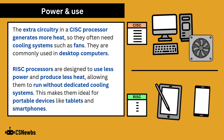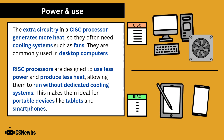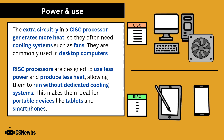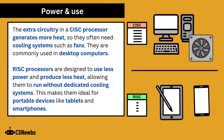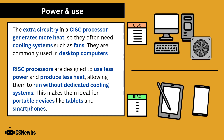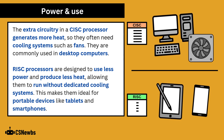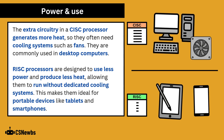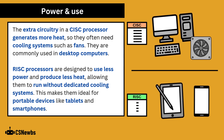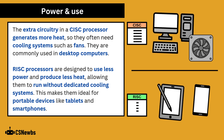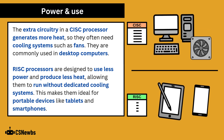The extra circuitry in a CISC processor generates more heat, so they often need cooling systems such as fans, meaning they're commonly used in desktop computers and laptops. RISC processors are designed to use less power and produce less heat, allowing them to run without dedicated cooling systems, making them ideal for portable devices like tablets and smartphones.